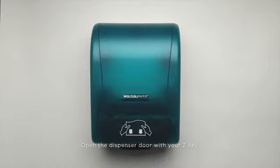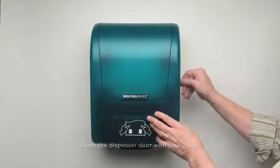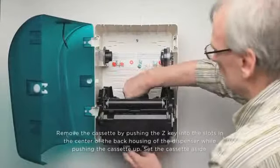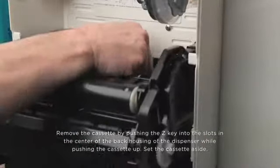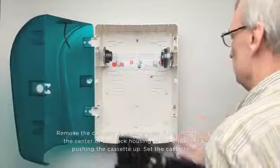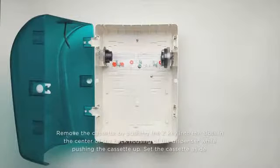Open the OptiServe dispenser door with the Z key. Remove the cassette by pushing the Z key into the slots in the center of the back housing of the dispenser while pushing the cassette up. Set the cassette aside.